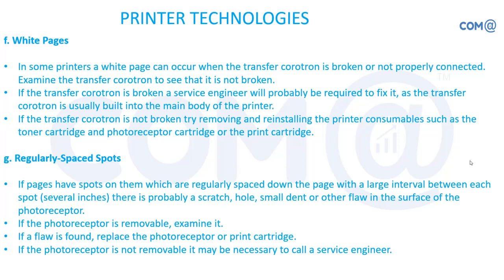Regularly spaced spots in the printout — dots or scratches appearing at consistent intervals — indicate a photoreceptor drum problem. Check the drum for scratches, holes, or small dents where toner settles in the empty space, causing that specific dot or line to appear at regular intervals on each print. You will need to replace the drum and ensure no hard surfaces enter the paper path that could damage it further.